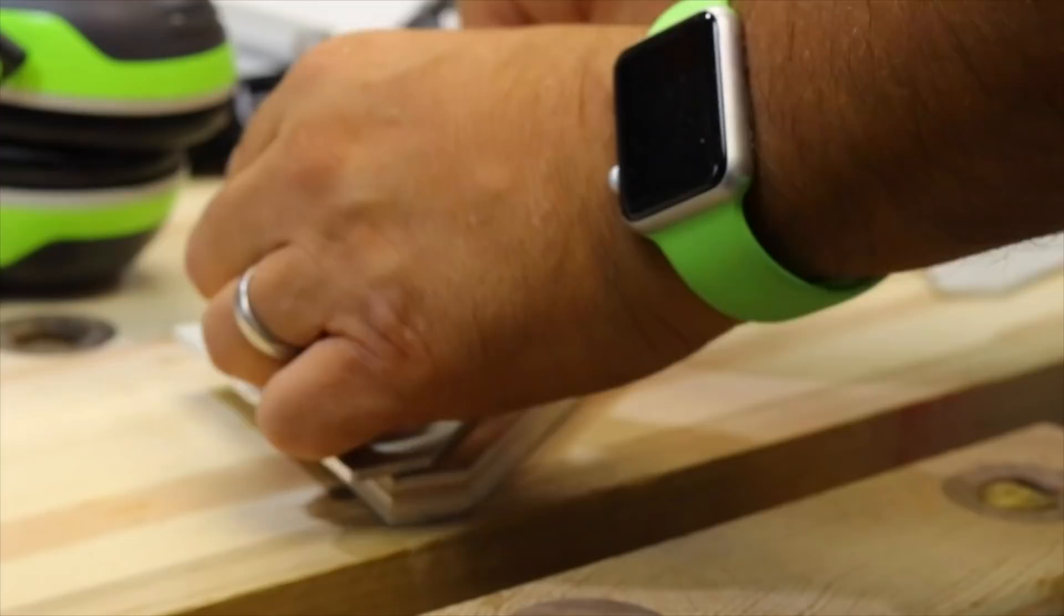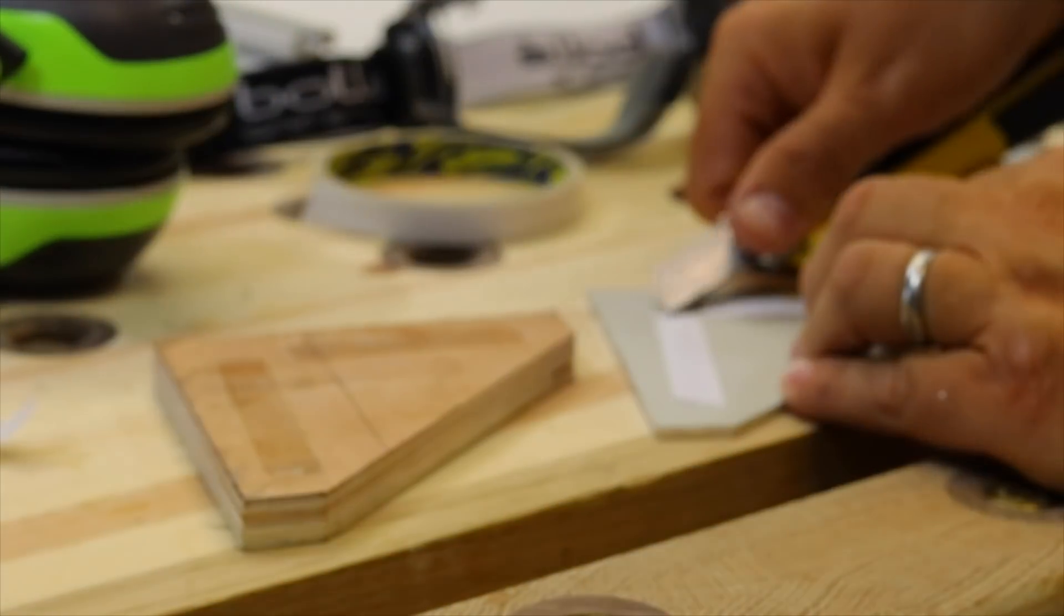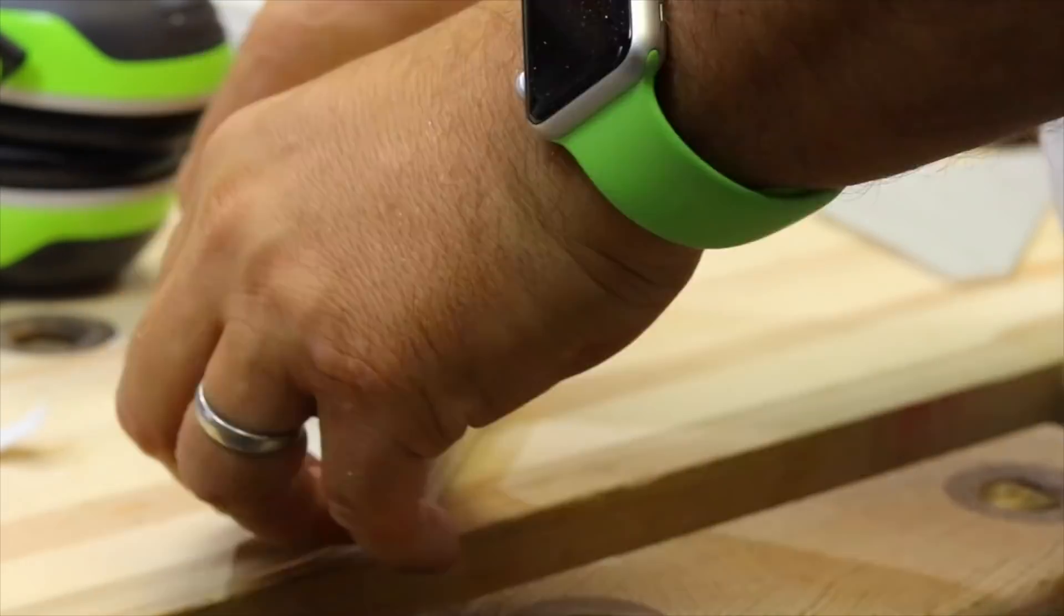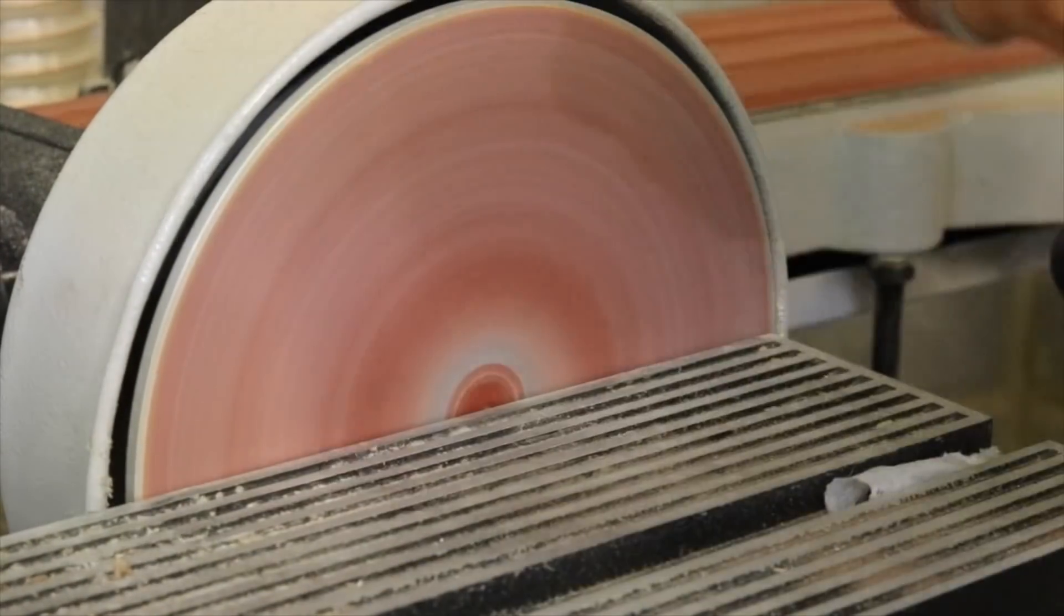So using some double-sided tape, I've fixed it to the template. So I fixed both pieces of aluminum to one side of the template—makes it easier to clean up and be as accurate as possible.